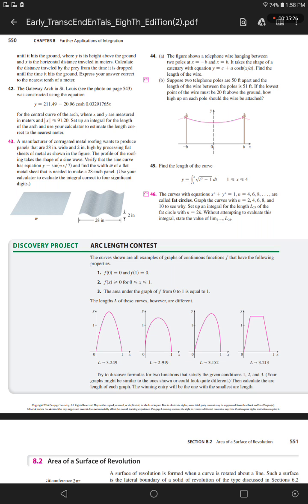Number 44, part A. The figure shows a telephone wire hanging between two poles at x equals negative b and x equals b. It takes the shape of a catenary with equation y equals c plus a times hyperbolic cosine of x over a. Find the length of the wire.